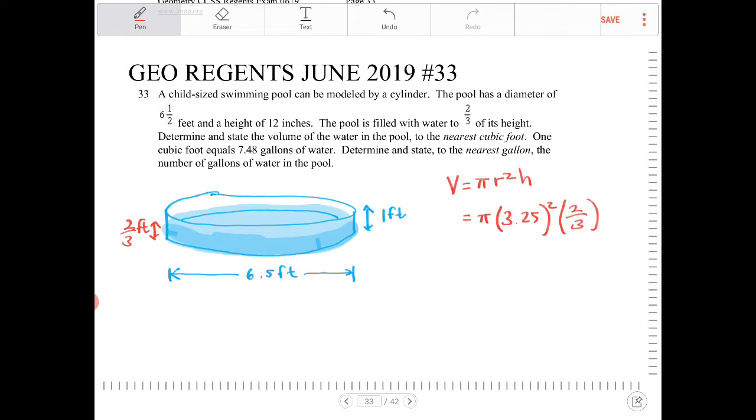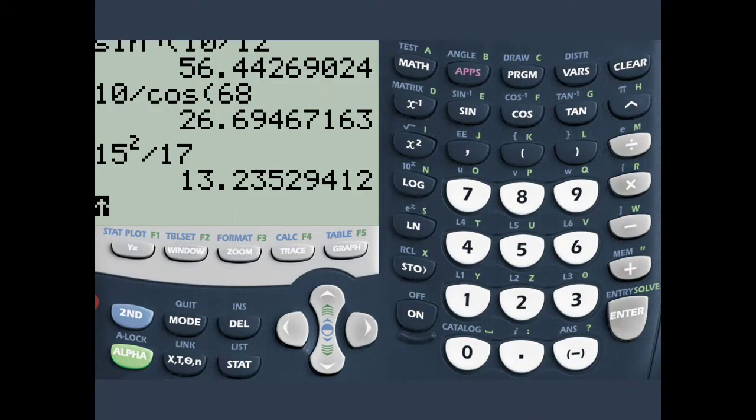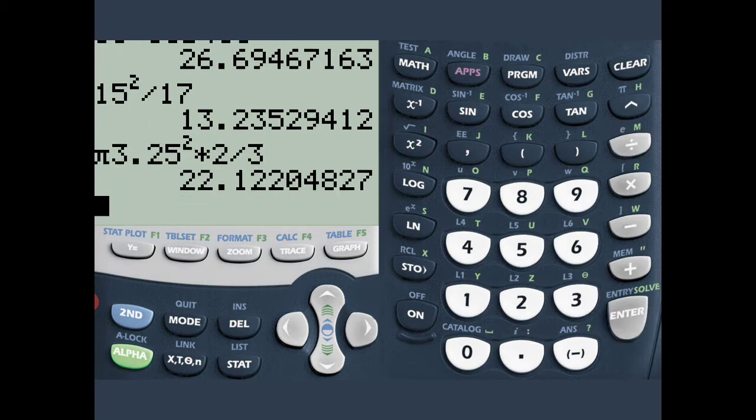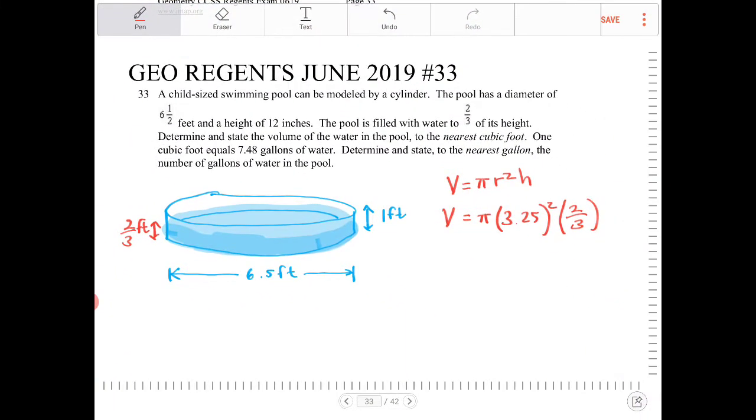This will give us the volume of water in the pool to the nearest cubic foot. Let's enter that into the calculator: π times 3.25 squared times 2 divided by 3. That gives us 22.122, which rounds to 22 cubic feet.